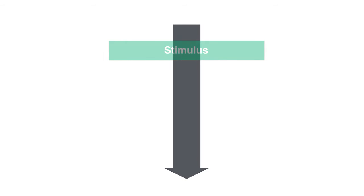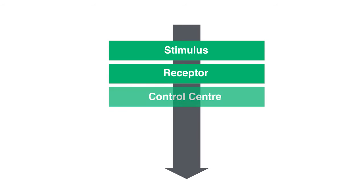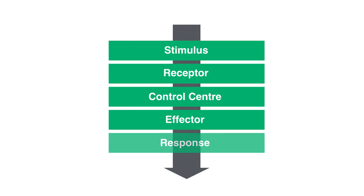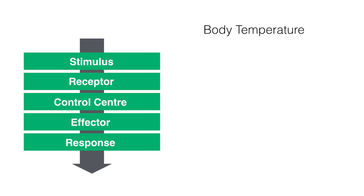Detecting and counteracting changes are made up of five different features: the stimulus, receptor, control center, effector, and the response. We're going to go in depth with these five features using body temperature as our trusty example. Don't worry, this will be quick and painless. Hopefully.